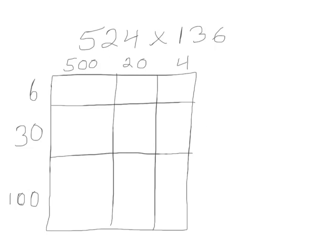This is lesson 7. Connect area diagrams and the distributive property to partial products of the standard algorithm with renaming. Here we're going to multiply 524 times 136. We now have 3 digit by 3 digit multiplication. We are going to designate 524 as our units. We're going to multiply it by 136.